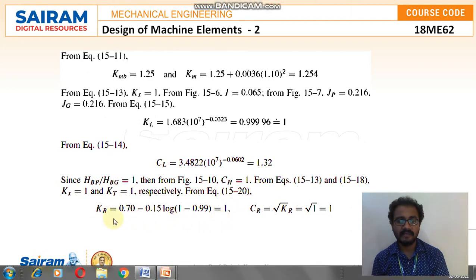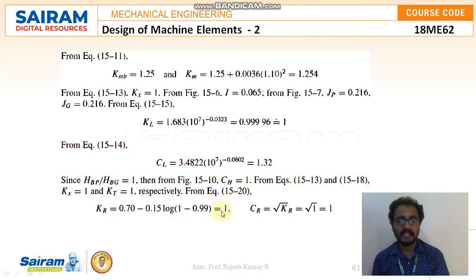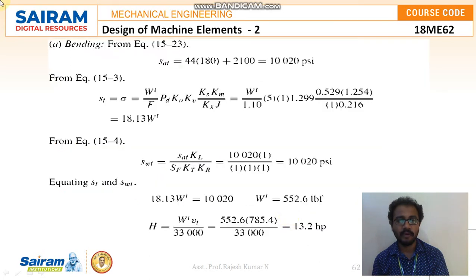The KR value is 0.70 minus 0.15 log of 1 minus 0.99. So KR value is 1 and the CR value again from the formula root of KR, that is root 1 which is equal to 1. Next is bending. The formula is S of 80 that is equal to 44 into 180 plus 2100, which is in terms of PSI. So answer is 10020 PSI I am getting.